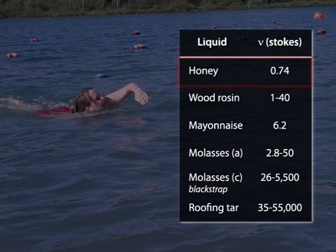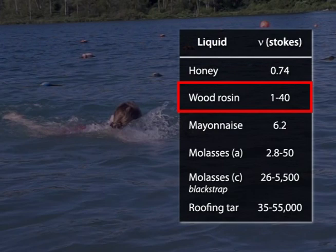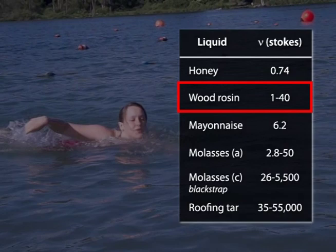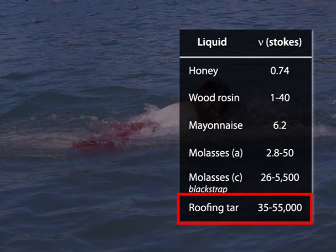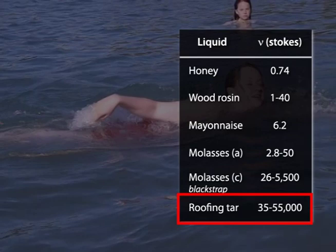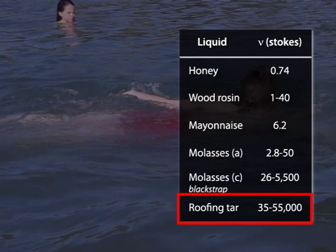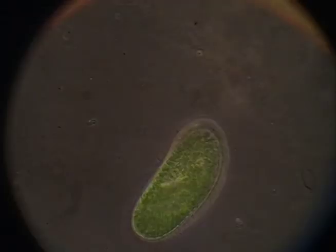The viscosity of wood rosin ranges from 1 to about 40 stokes — better, but nowhere near viscous enough. Blackstrap molasses is getting there, with viscosity sitting in the low thousands. What does get us into the proper range is roofing tar, which, depending upon its temperature, has kinematic viscosity ranging from 35 to 55,000 stokes. 7,500 stokes is about what you'd get with hot roofing tar. So if we swam at a Reynolds number of 0.000267, it would be like swimming through hot roofing tar.